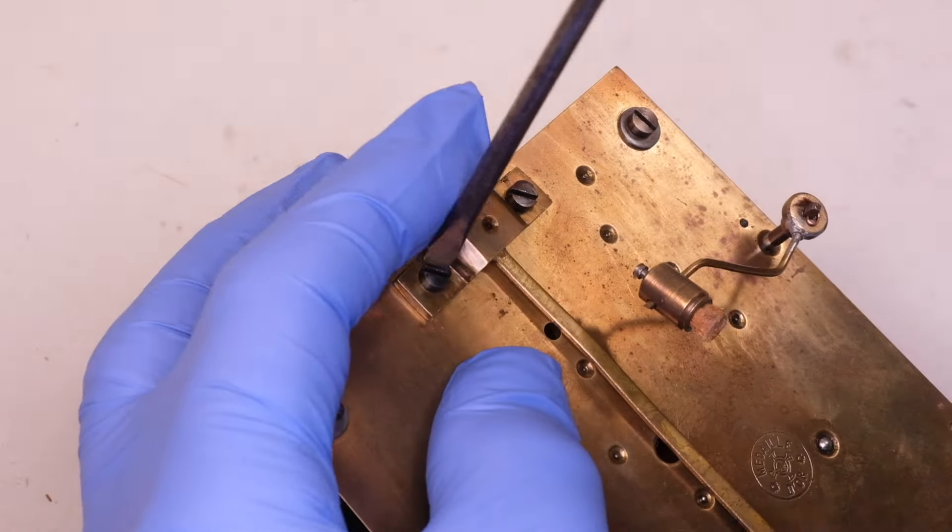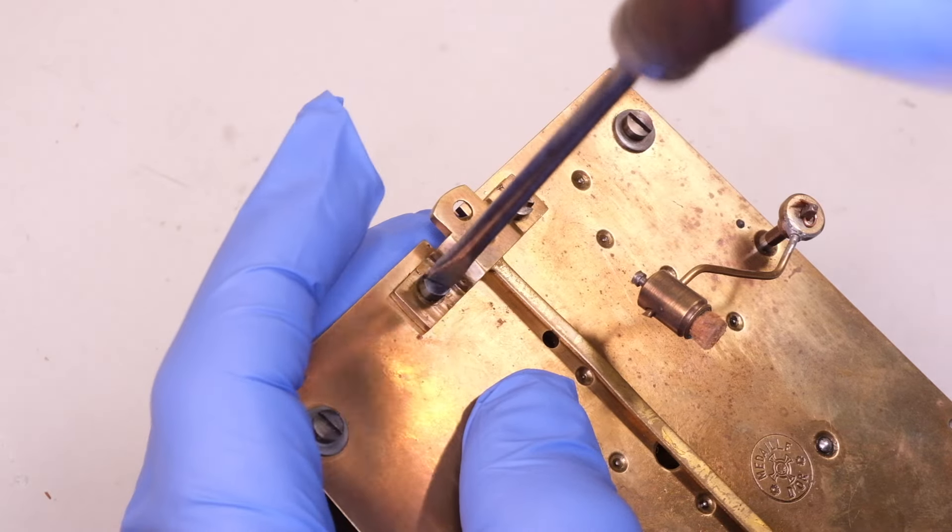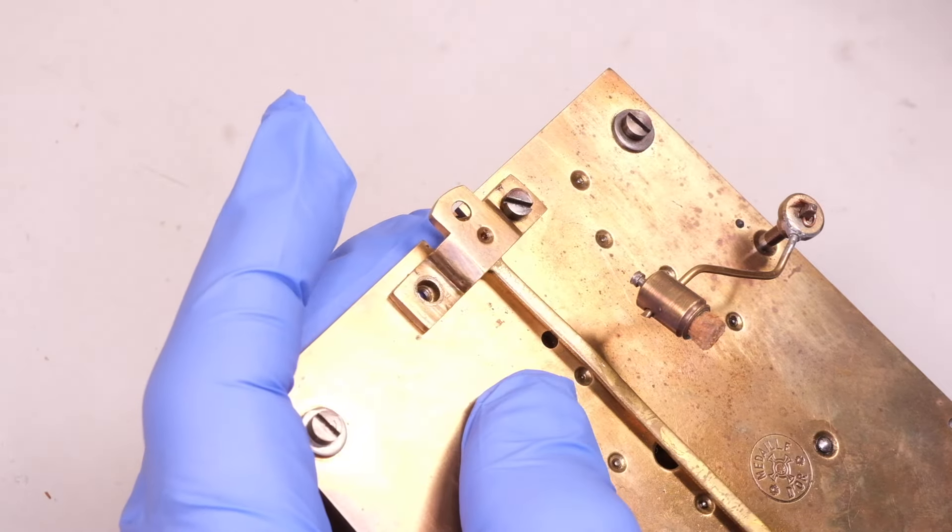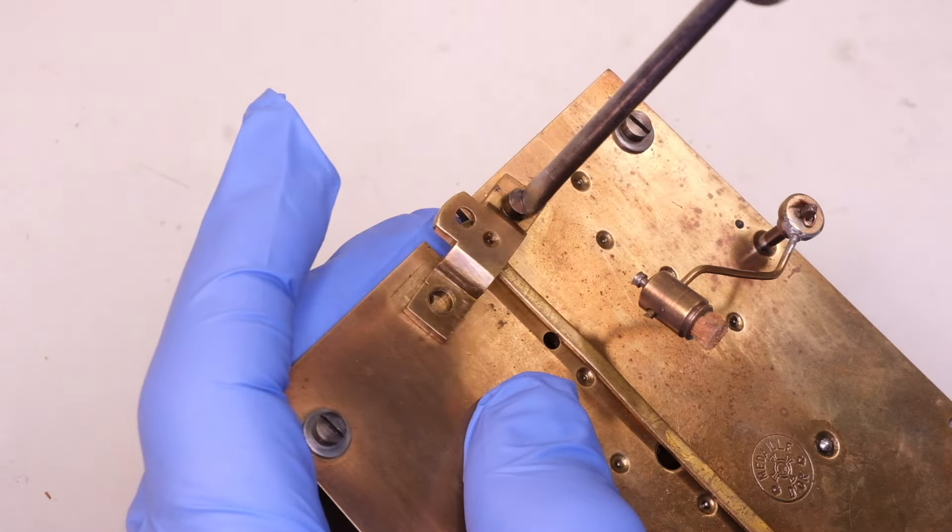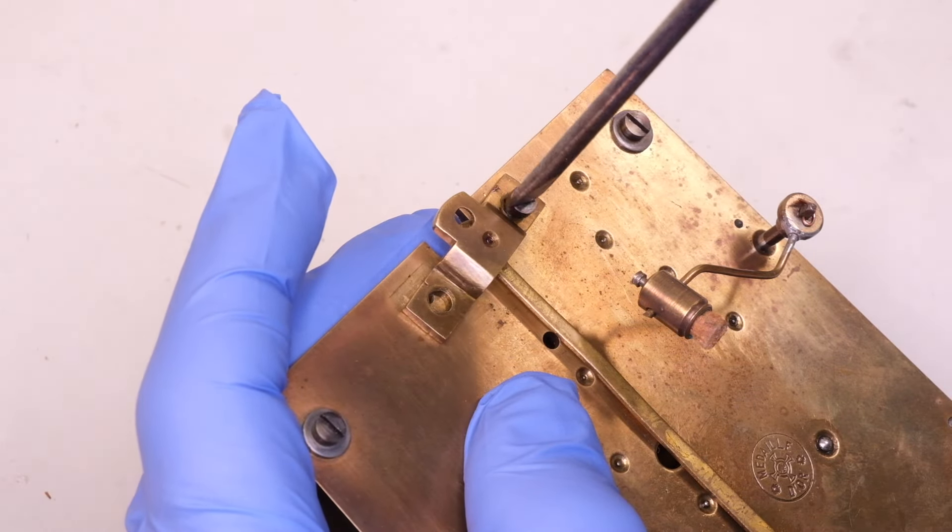When we remove the crutch, the pallet arbor and pallets, we can see that there are a couple of issues facing our repair that we might want to address.